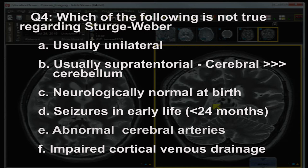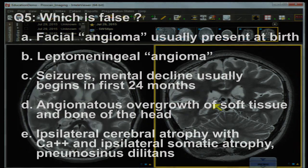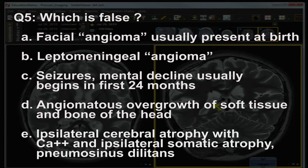Question number four — which is not true regarding Sturge-Weber: A) usually unilateral; B) usually supratentorial, cerebral much more common than cerebellar; C) neurologically normal at birth; D) seizures in early life before 24 months; E) abnormal cerebral arteries; F) impaired cortical venous drainage. Question number five — which is false: A) facial angioma usually present at birth; B) leptomeningeal angioma; C) seizures and mental decline usually begin in the first 24 months.